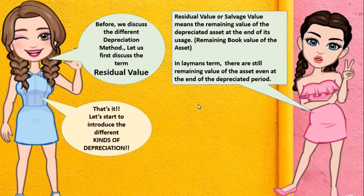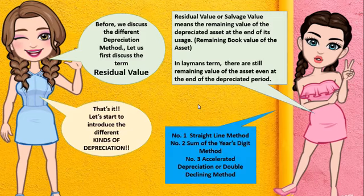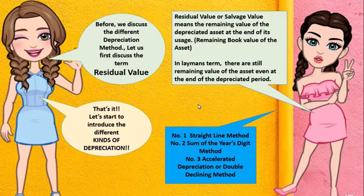Let's introduce the different kinds of Depreciation. Number 1 is the Straight Line Method. Number 2 is the Sum of the Years Digit Method. And number 3 is the Accelerated Depreciation or Double Declining Method.